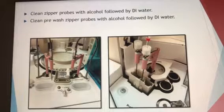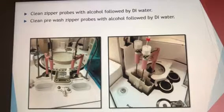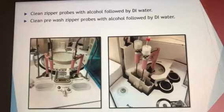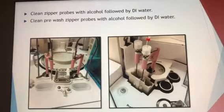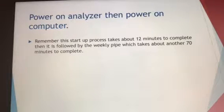The zipper probes are in the first picture and the pre-wash zipper probes are in the second picture. For both, do the same as for the reagent probe: clean with alcohol and then follow with DI water. Once finished, you are done with all manual cleaning for the 601 side.